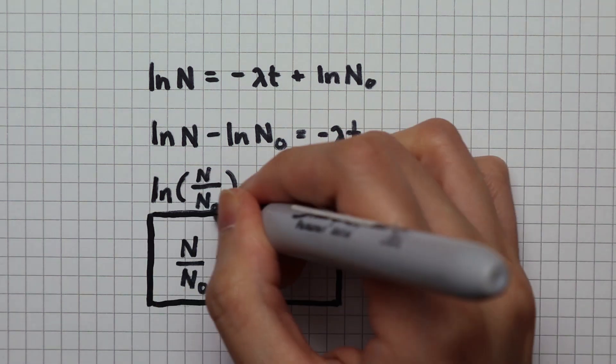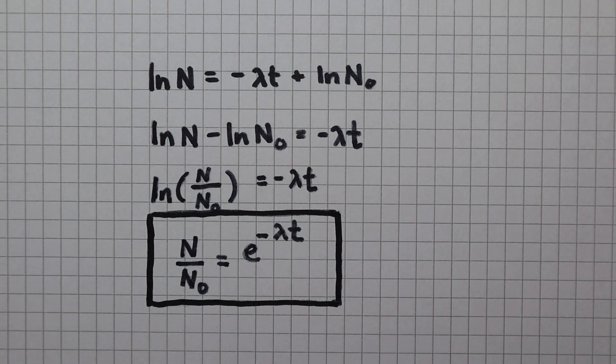This is the second radioactivity equation, the exponential decay equation. For A-level physics, you do need to know how to use this equation. And now you also know where it comes from.